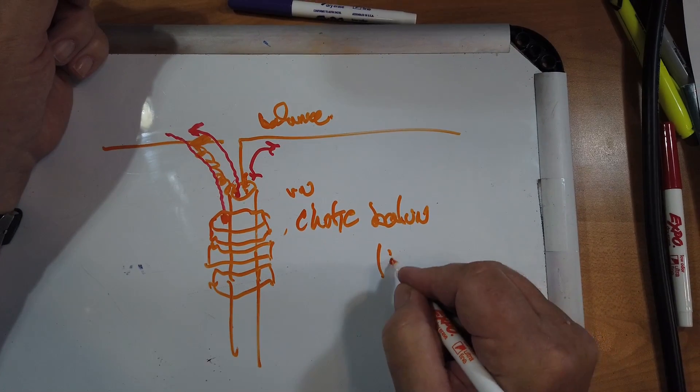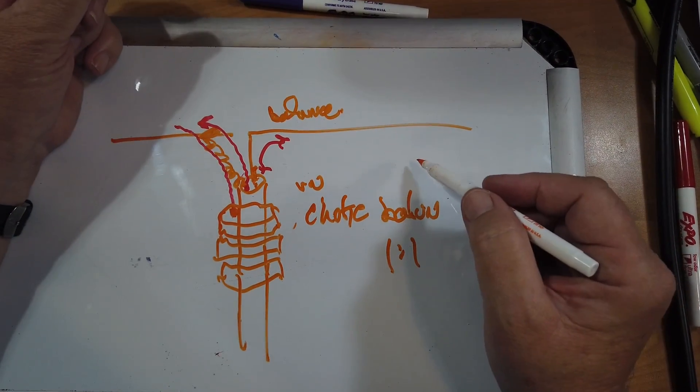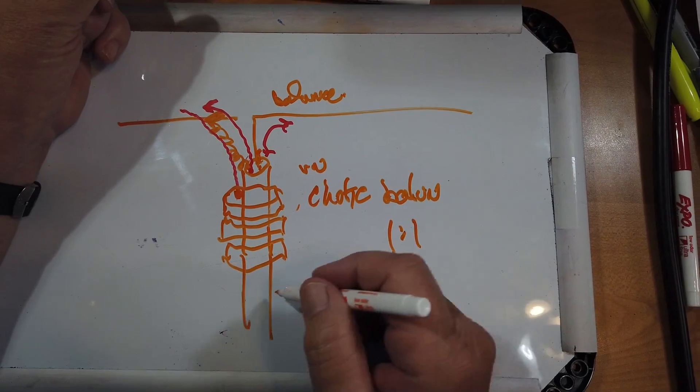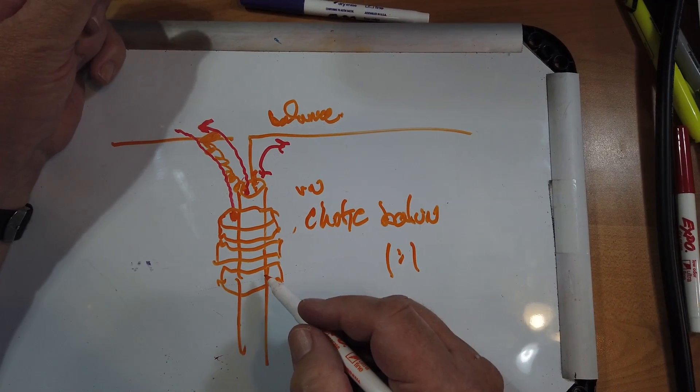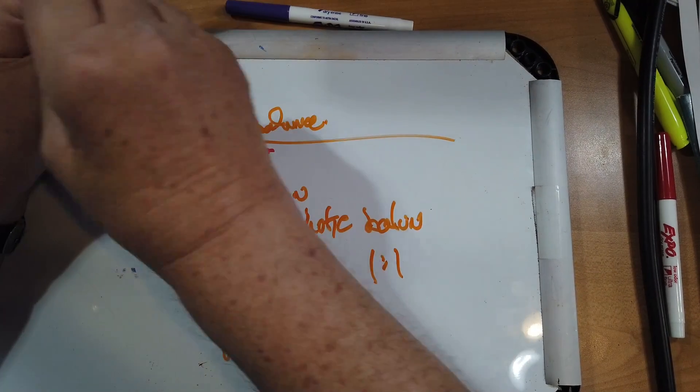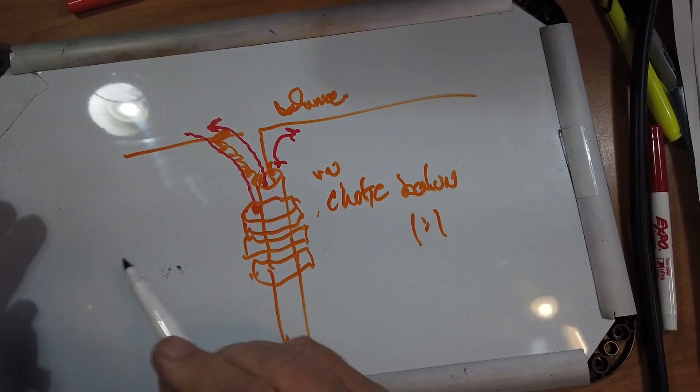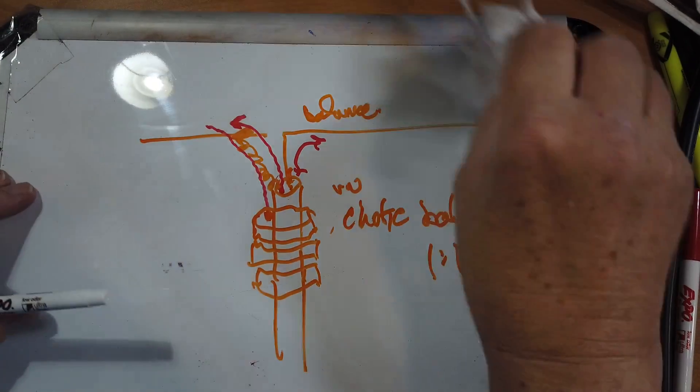Choke baluns are always one-to-one, so there's no transformer action taking place here. But, if you do this, you can eliminate the return on the outside. You can buy these from MFJ from a whole bunch of people, just put chokes on there. Or, you can create a quickie coax balun.